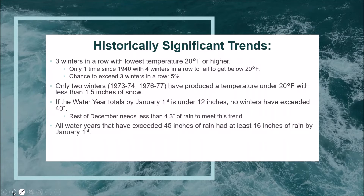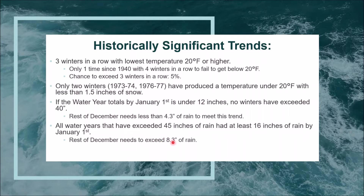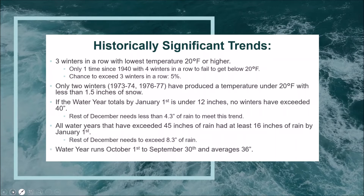All water years that have exceeded 45 inches of rain — reaching the hyperactive category — have had at least 16 inches of rain by January 1st. The next two and a half weeks of December would need 8.3 inches of rainfall, which is 150 percent of a normal December. I don't think that could happen. Models show somewhere between three and six inches for the rest of December, though I don't really trust anything beyond seven days out.